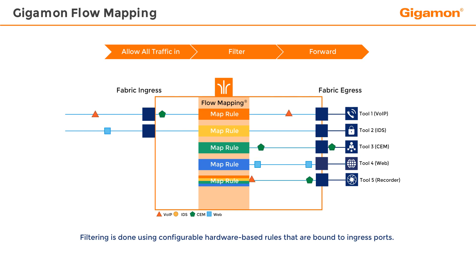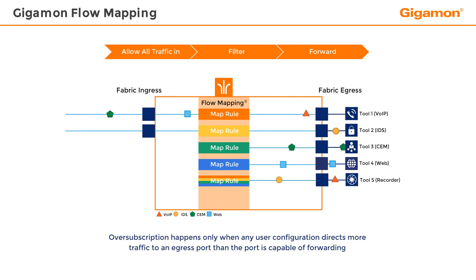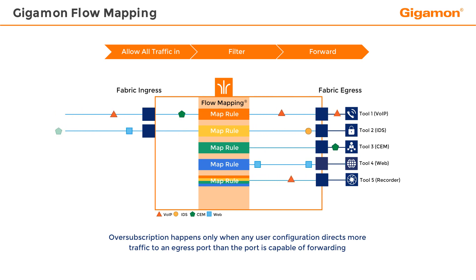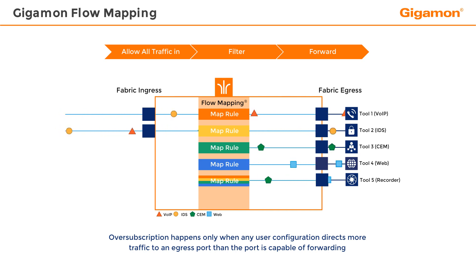Filtering is performed in hardware, so there is no packet processing bottleneck. The only risk of oversubscription is a user configuration where more traffic is directed to an egress port than the port is capable of forwarding.